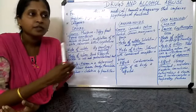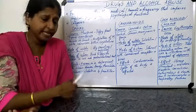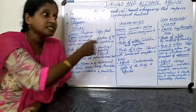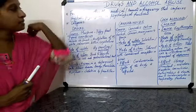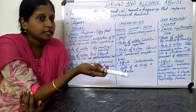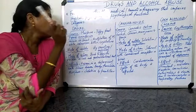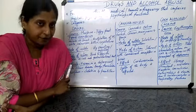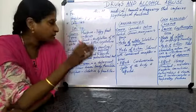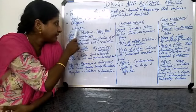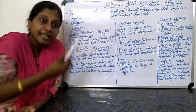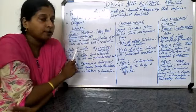We are going to discuss three categories of drugs and their effects. The first category is opioid drugs. Opioids are one category, and the source of opioids is morphine.